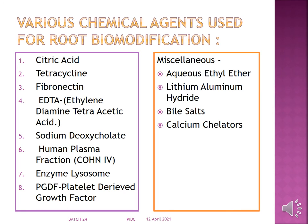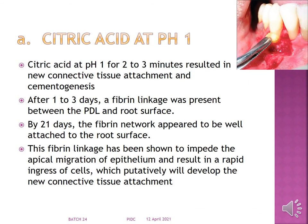Various chemical agents have been used for root biomodification. Starting with citric acid used at pH 1, application for 2–3 minutes resulted in new connective tissue attachment as well as cementogenesis. After 1–3 days, a fibrin linkage was found to be present between the periodontal ligament and the root surface.